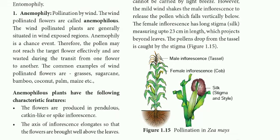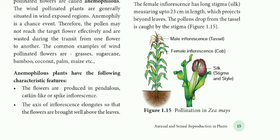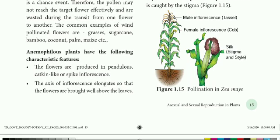The animophilous plants have the following character features. Examples include grasses, sugarcane, bamboo, and coconut. The character features relate to how pollen is adapted for wind transport. If pollen is light and powdery, it can be easily carried from one place to another. That is why there are specific characteristics in animophilous flora.